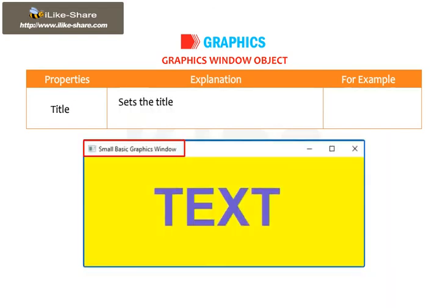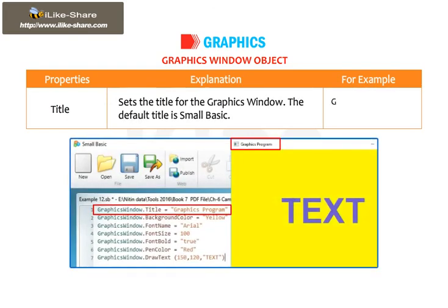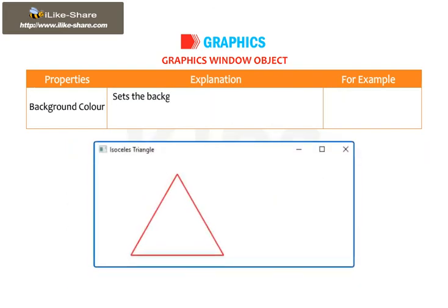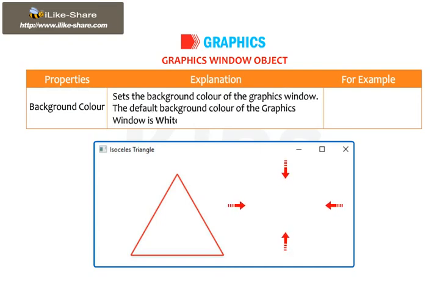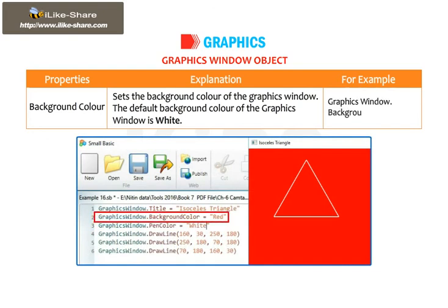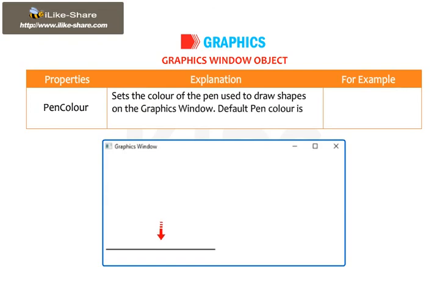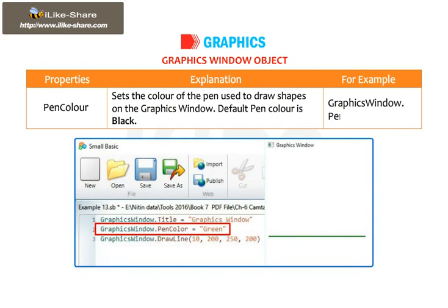Title sets the title for the Graphics Window. The default title is SmallBasic. Example: GraphicsWindow.Title = "GraphicsProgram". Background Color sets the background color of the Graphics Window. The default background color is White. Example: GraphicsWindow.BackgroundColor = "Red".